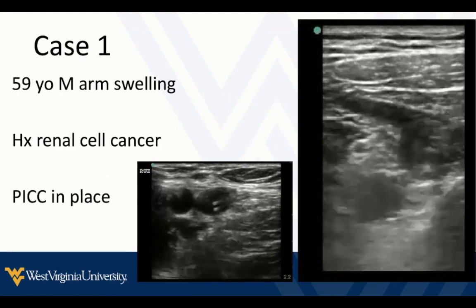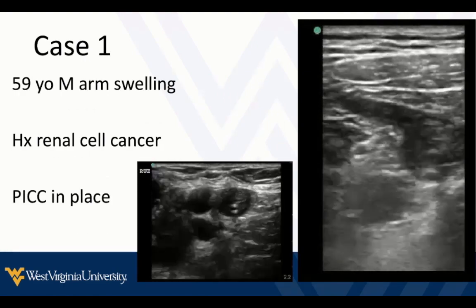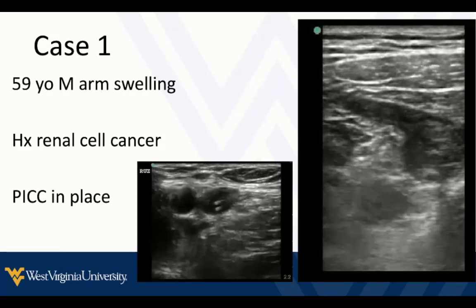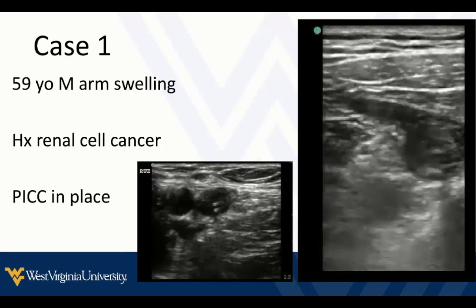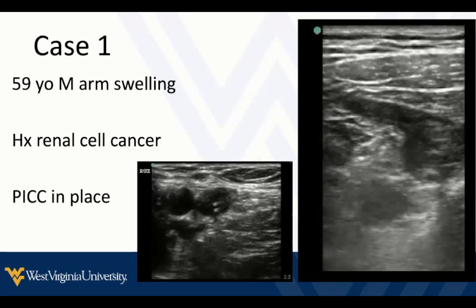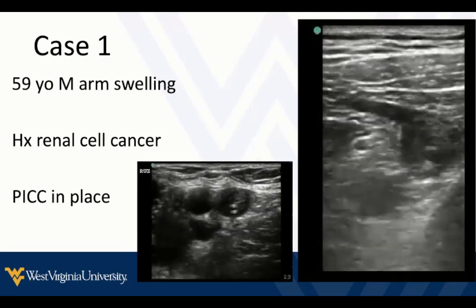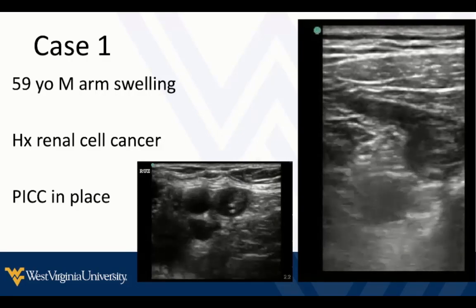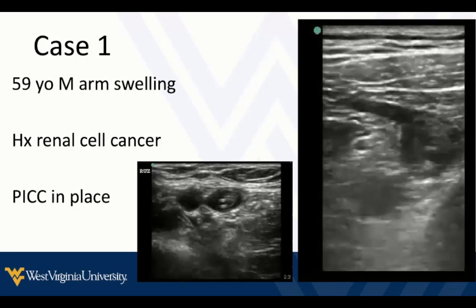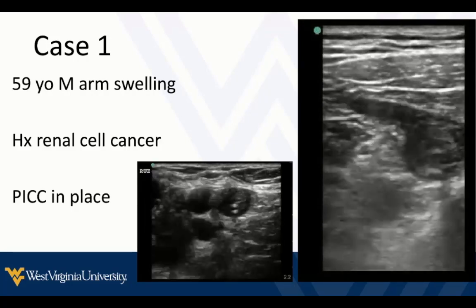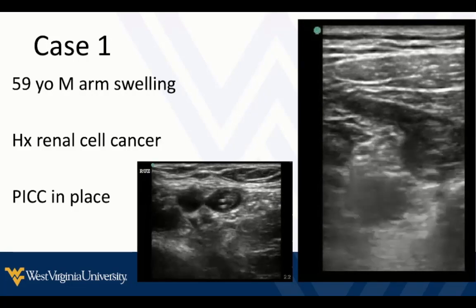I like to start out with a few cases that might be things you see on the floors, in the emergency department, in the ICU, or even in the clinic. This first case is a 59-year-old man who's got arm swelling, history of renal cancer, has a PICC line in place, and just has some arm swelling — really not much else going on. We'll get back to these findings eventually.